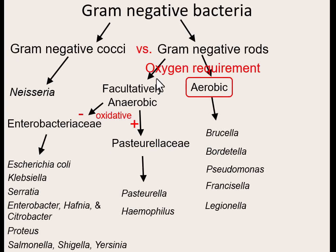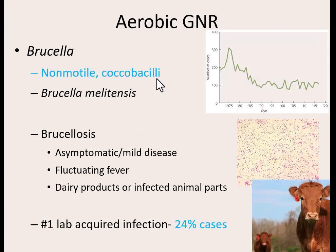Now onto a different oxygen requirement — strictly aerobic bacteria: Brucella, Bordetella, Pseudomonas, Francisella, and Legionella. The first is Brucella — a non-motile coccobacilli, so it is a very short rod. Although there are lots of Brucella species out there, there's only one that causes issues in humans, and that's Brucella melitensis.